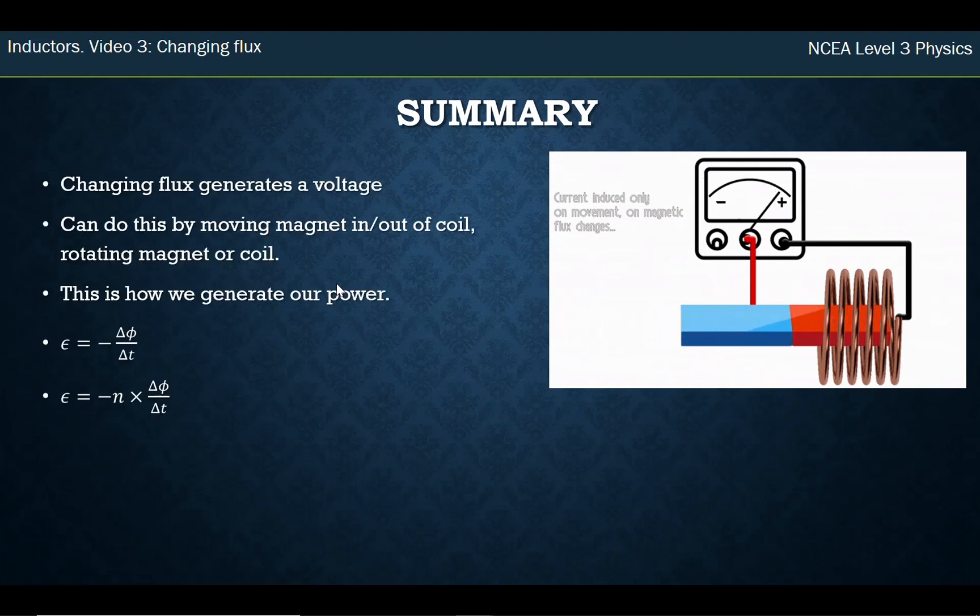In summary, it's the changing flux—I can't stress how important that is. Not just flux itself, but changing flux generates a voltage. We can do that by moving a magnet in and out of the coil or rotating a magnet near a coil. This is how we generate our power in New Zealand, apart from solar panels which work in a slightly different way. Faraday's law is given by the change in flux over change in time. If you're doing this for an inductor that has many loops of wire, you have to multiply that voltage by how many loops of wire you have.